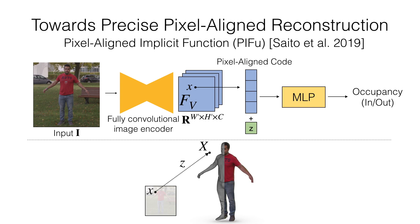Given the pixel-aligned code and the queried depth value z, we can infer 3D occupancy fields in a pixel-aligned manner.